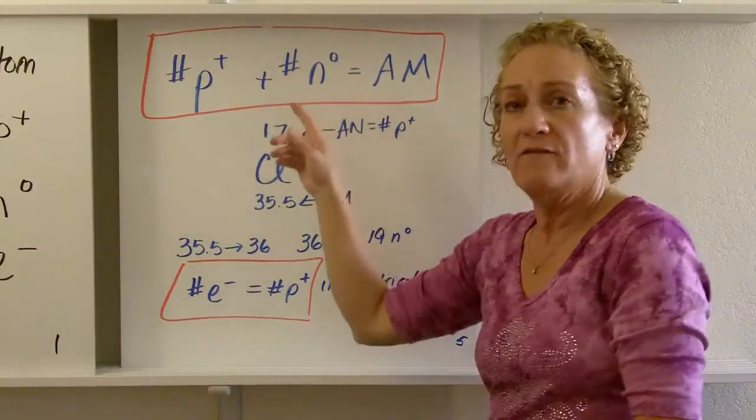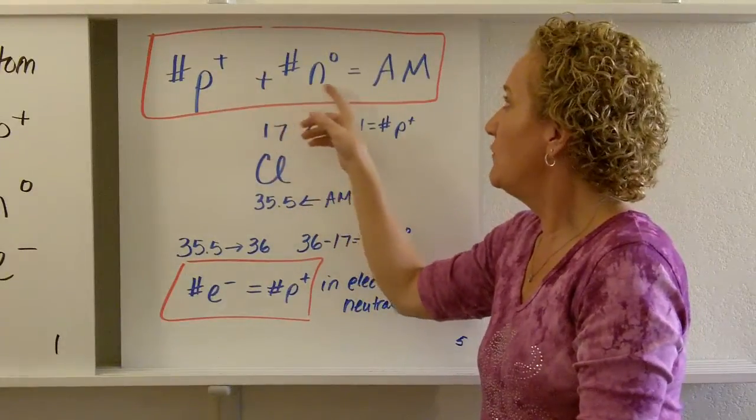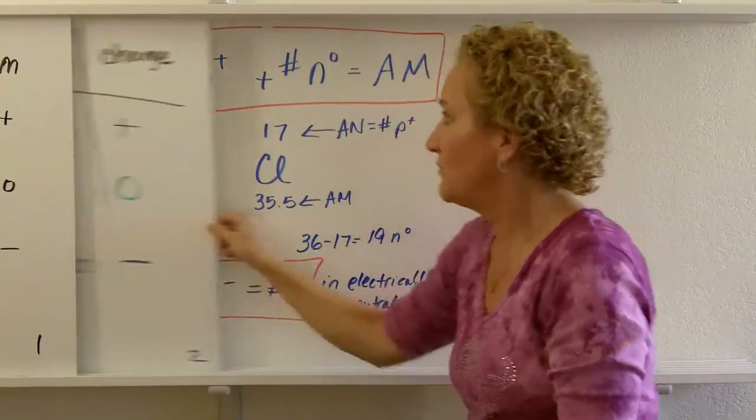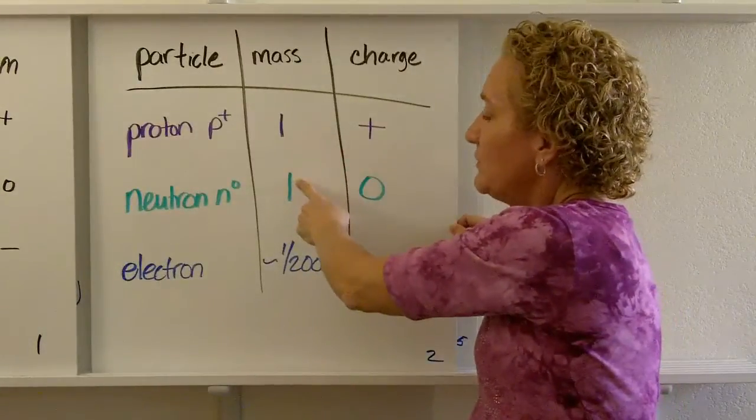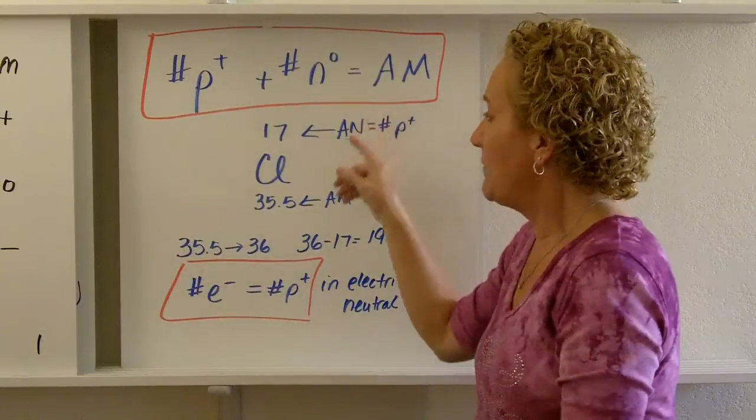So here's the math of the chemistry. The number of protons plus the number of neutrons equal the atomic mass, which kind of makes sense because when you look at this, one plus one, right? So you add those two together, and that's going to give you the atomic mass.